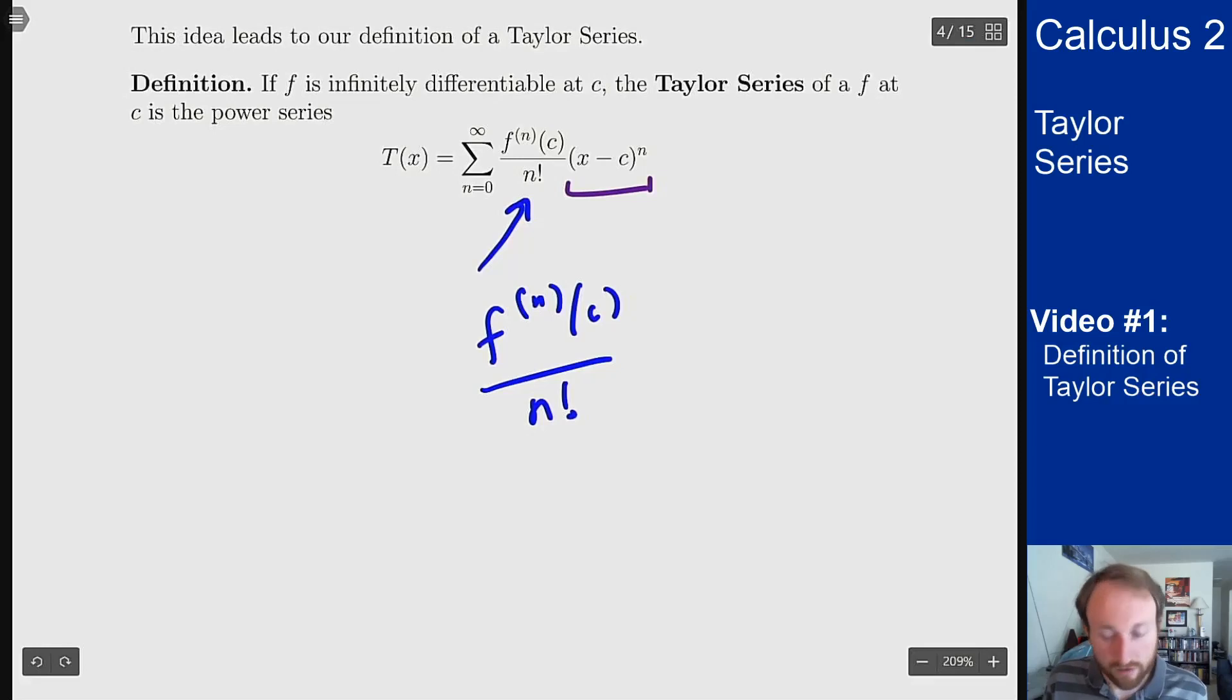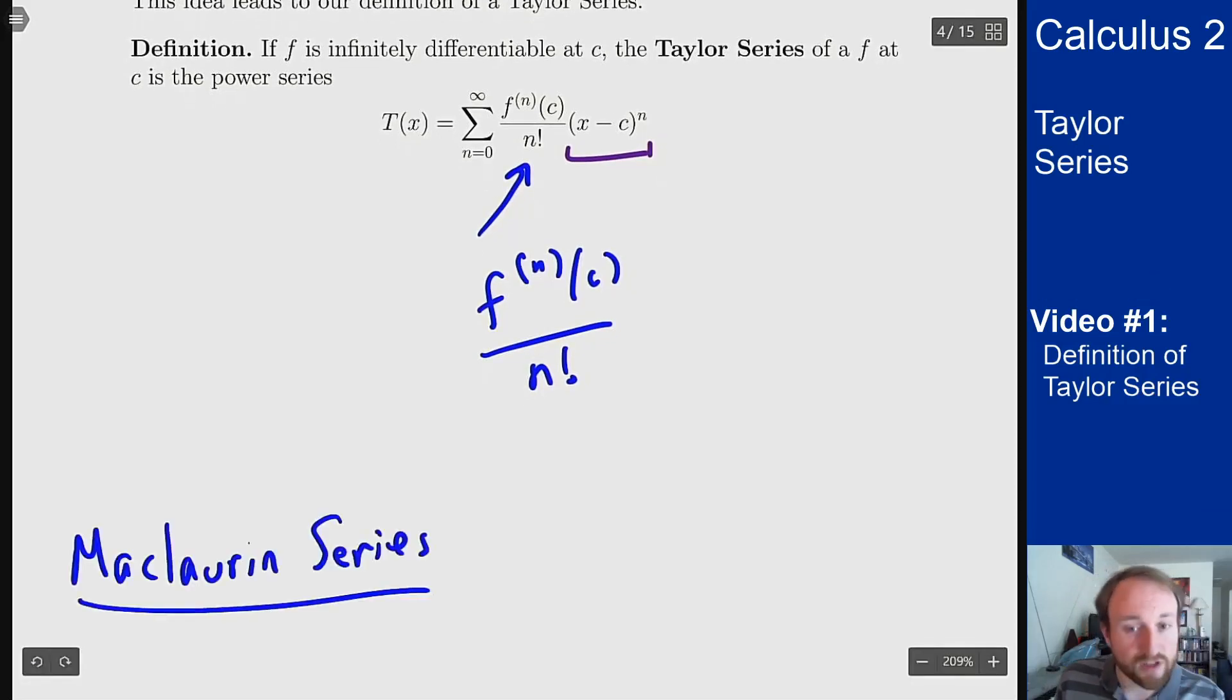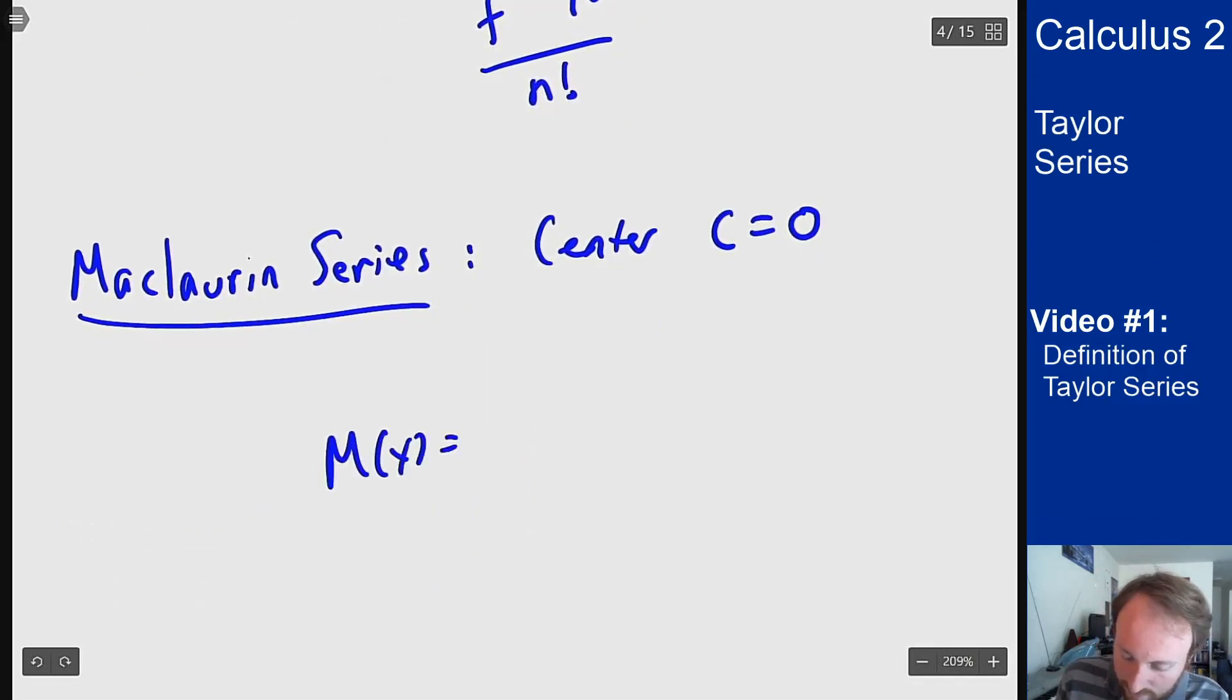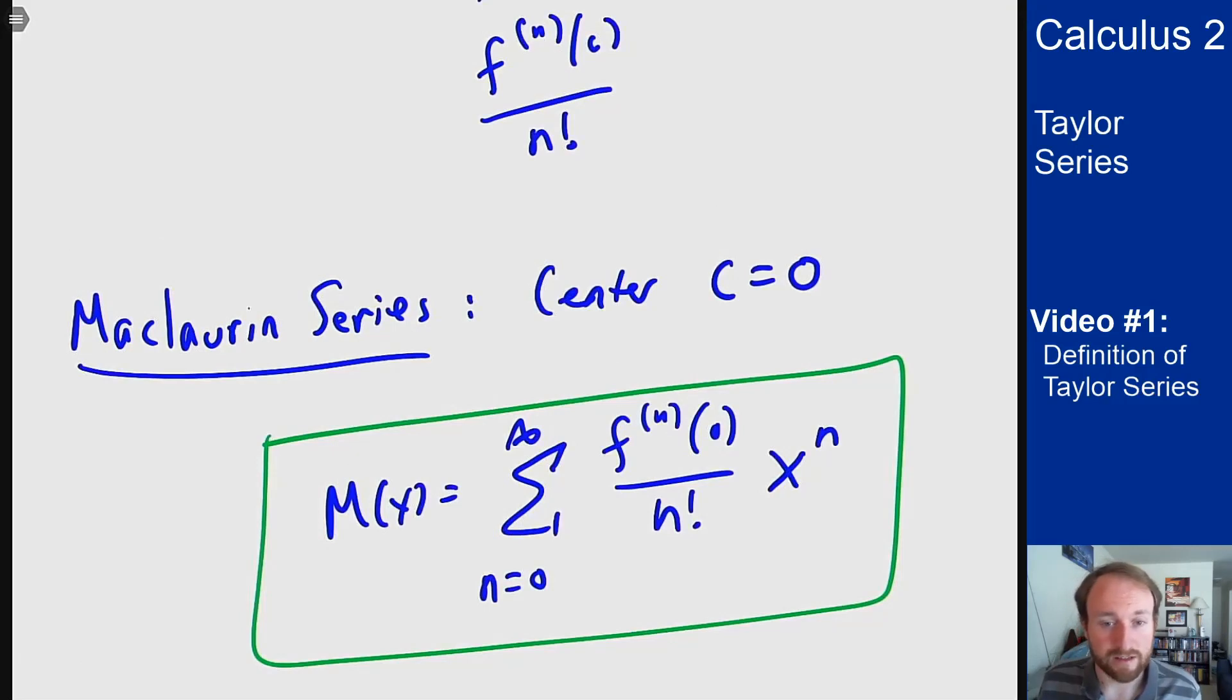In addition to Taylor series we have what are called Maclaurin series. These are just series where the center c is zero. So it's a series of the form M of x is the sum from zero to infinity nth derivative at zero over n factorial times x to the n. So that's the definition of what these things are.